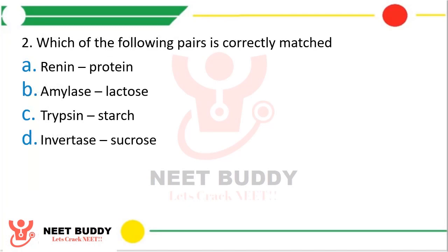Question number 2. Which of the following pairs is correctly matched? Option A. Renin–protein, option B. Amylase–lactose, option C. Trypsin–starch, option D. Invertase–sucrose. The correct answer is option D, Invertase–sucrose. Renin with single N is secreted by JG cells of kidney. Amylase is for polysaccharides, not lactose. Trypsin is for protein, not starch. Invertase is correct — it digests sucrose.